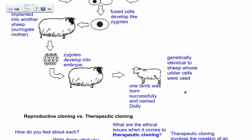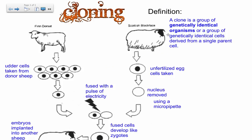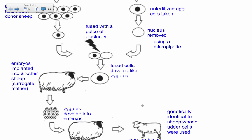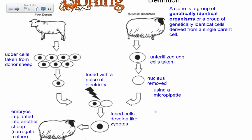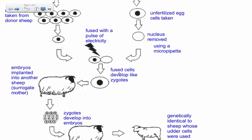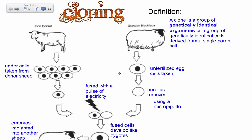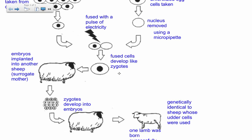That was Dolly the Sheep. It is genetically identical to which sheep? To the surrogate mother? No. To the egg? No — that was an empty egg with no genetic information. Dolly is actually genetically identical to the Finn Dorset sheep, where we took the adult differentiated udder cells. That's the overall method for how to produce a clone through reproductive cloning.